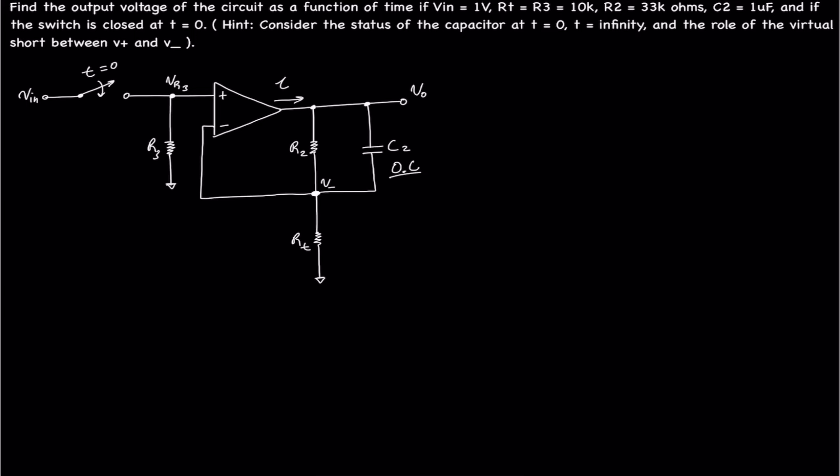We're given a hint: virtual short, and we should probably look into the capacitor at t equal 0 and t equal infinity. By virtual short, we know that we can assign the voltage at V plus to V minus, which is equal to Vin. This is because the voltage across R3 is the same, because R3 is in parallel with Vin.